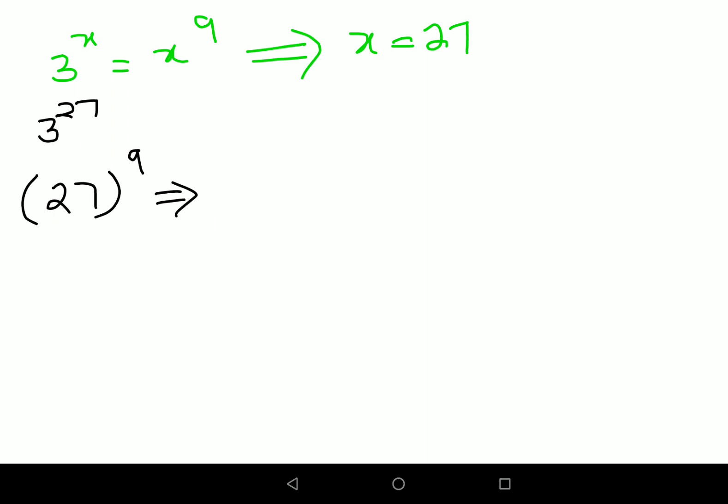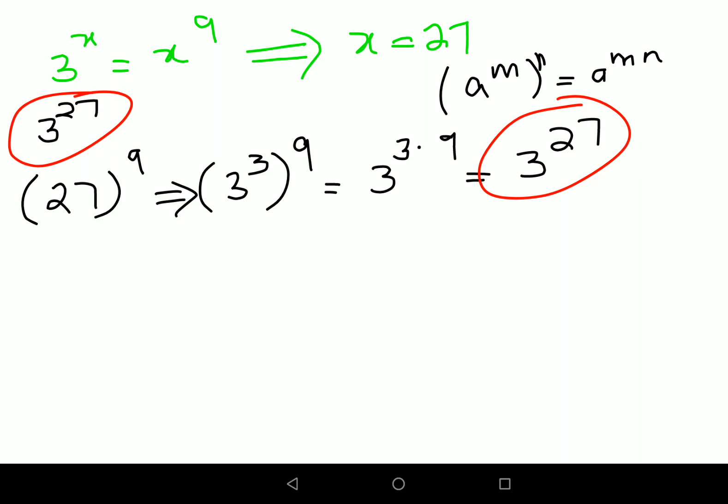Now we know 27 is 3 cube, so this is (3^3)^9. We already know a^m raised to n gets you a^(m·n), so here we can have 3^(3·9) that gets you 3^27. That, my dear friends, is the value of your LHS as well.